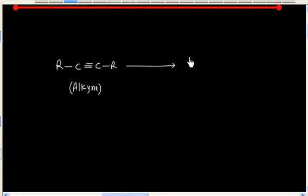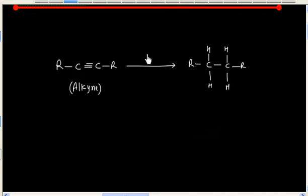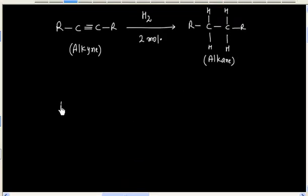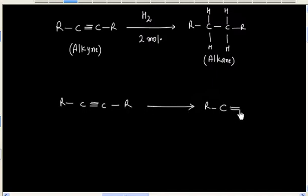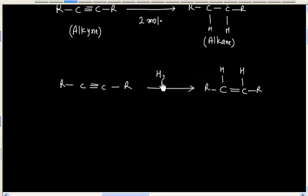An alkyne can be converted to an alkane by adding 2 mol of hydrogen, and it can be converted to an alkene by adding 1 mol of hydrogen.